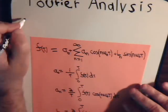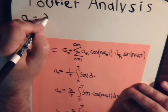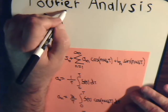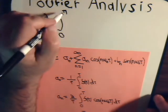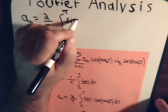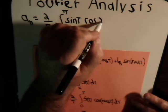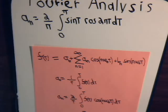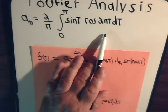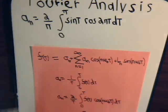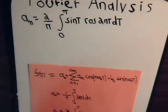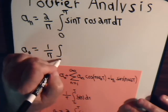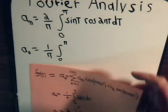So a sub n equals 2 divided by π times the integral from 0 to π times the sine of t times the cosine of 2nt dt. And for a sub 0, n is 0, cosine of 0 is 1.